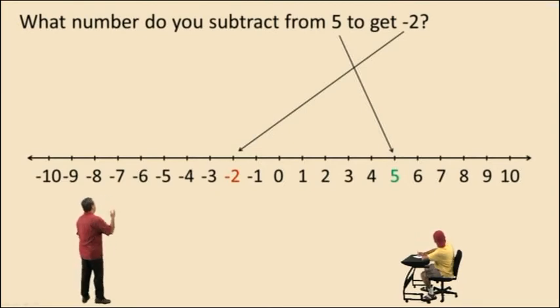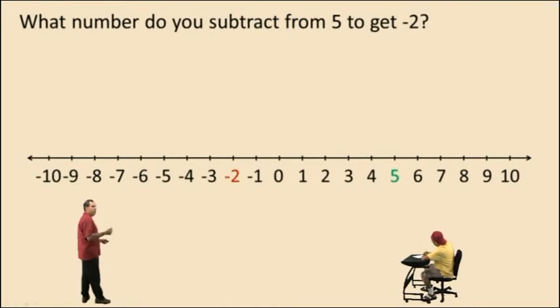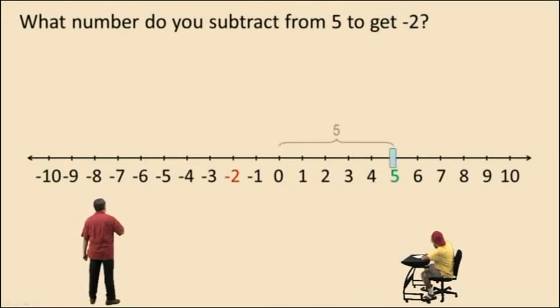With this question here, what number do you subtract from 5 to get to negative 2? In other words, how many units do you have to move to the left from 5 to arrive at negative 2? Well, if we're at 5, we know if we move 5 units to the left, we're at 0. But to get to negative 2, we still have to move 2 more.